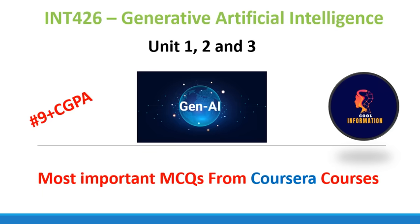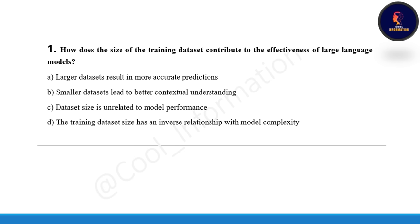Welcome everyone to the 9 plus CGPA MCQ series. In this particular video we will see a simple question paper of generative artificial intelligence, covering questions from the first six Coursera courses in your syllabus. Some questions are taken from videos and some from PDFs found while doing the course. All 30 questions discussed are very important — go through each one to score better.